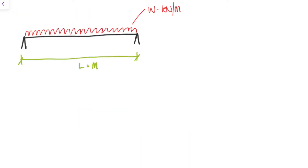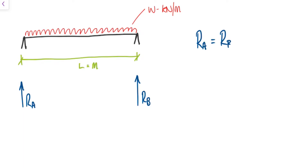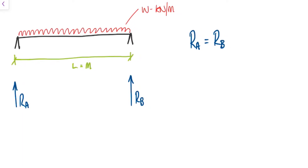So we will get two reactions — one at this support and one at this support. Now as the load is evenly spread over the length of the beam, the reaction at the first support A and the reaction at the second support B will be equal to each other. In this case they are going to be equal to WL over 2.